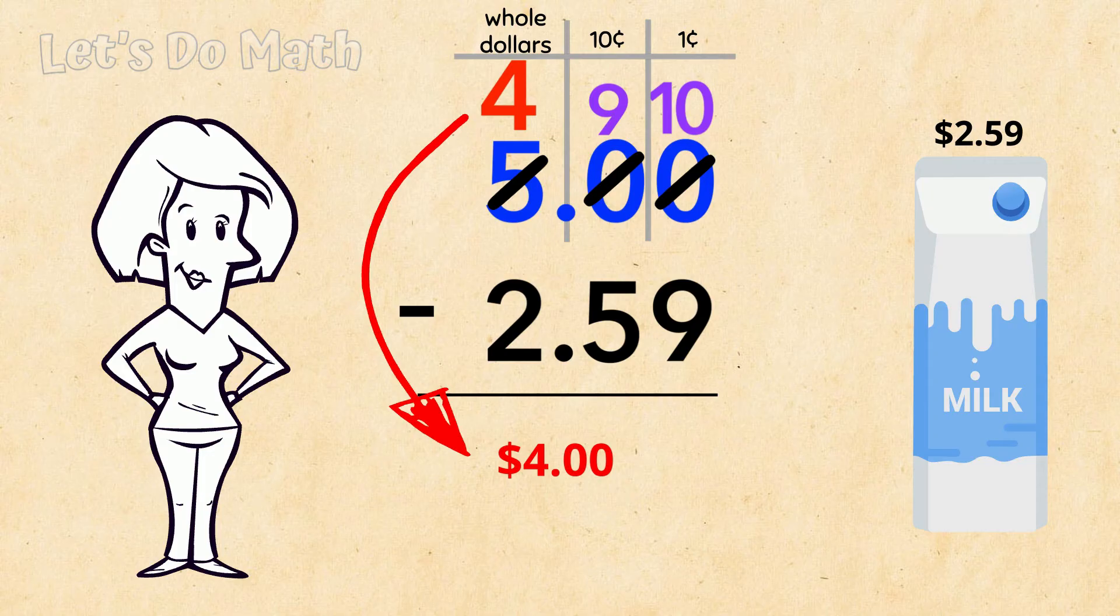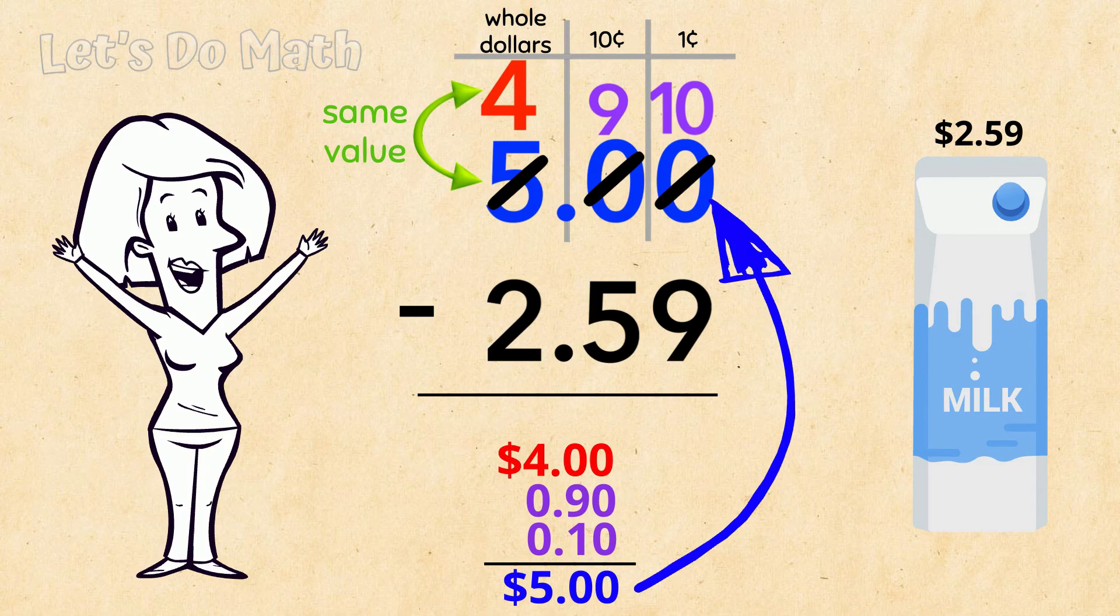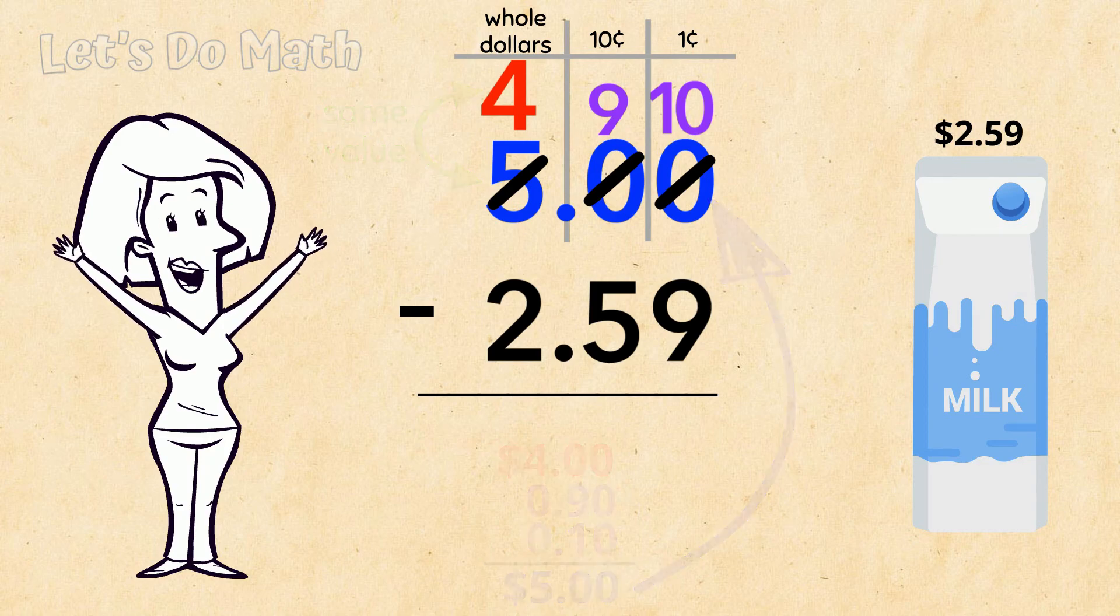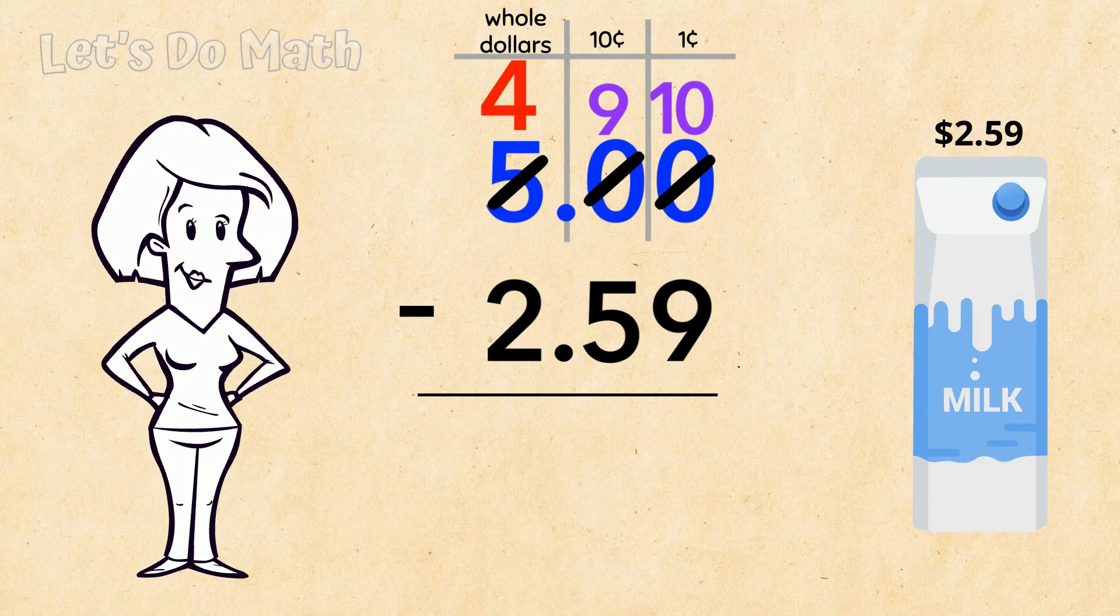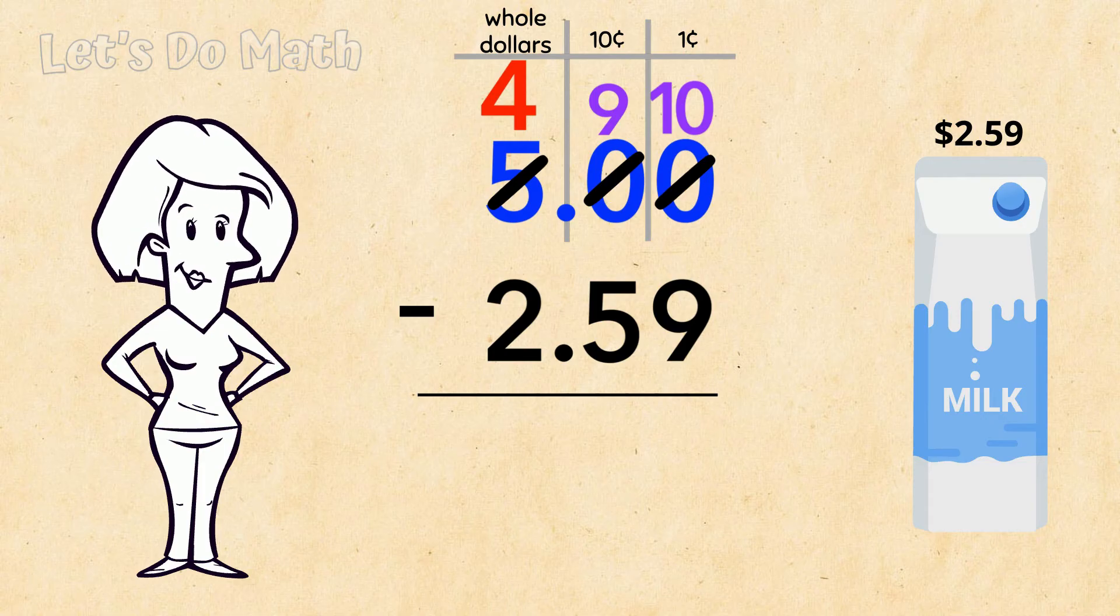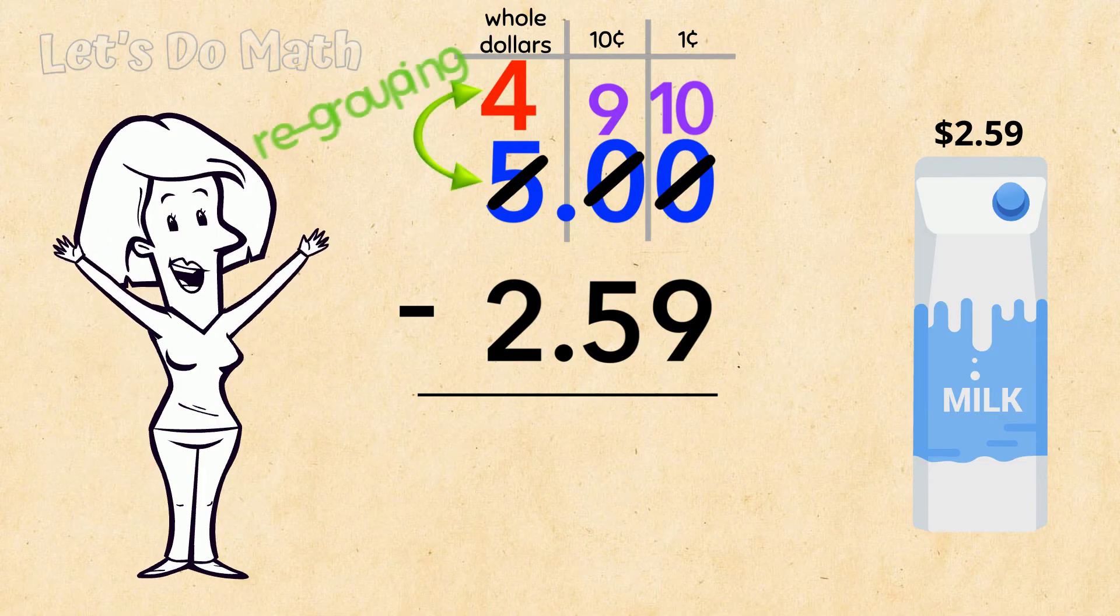$4 plus 90 cents plus 10 cents is $5. The value is exactly the same as the original $5, only now it's expressed in a way that lets me work through the math easily. That is what regrouping is.